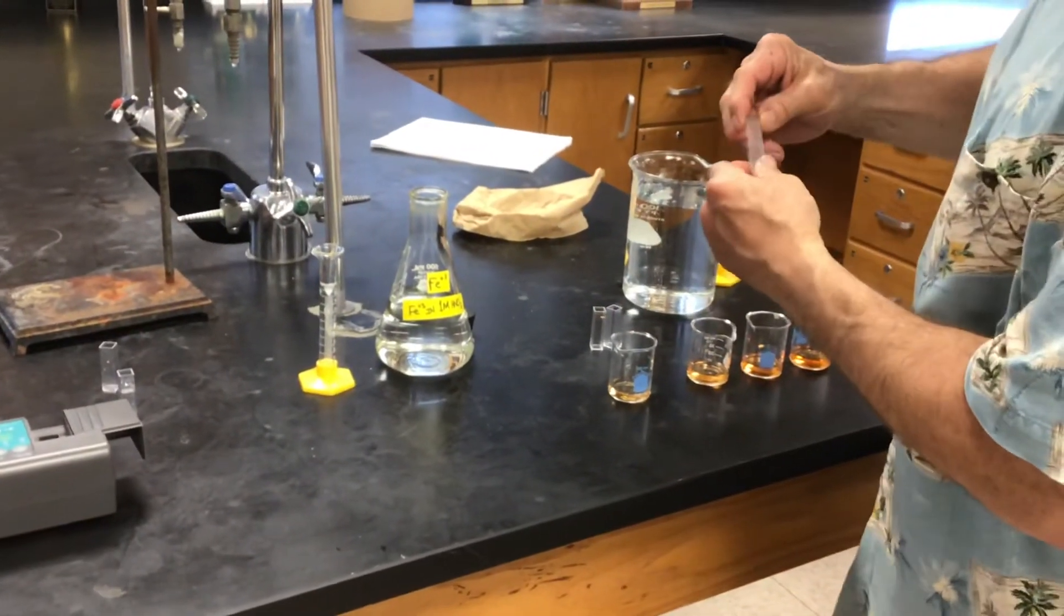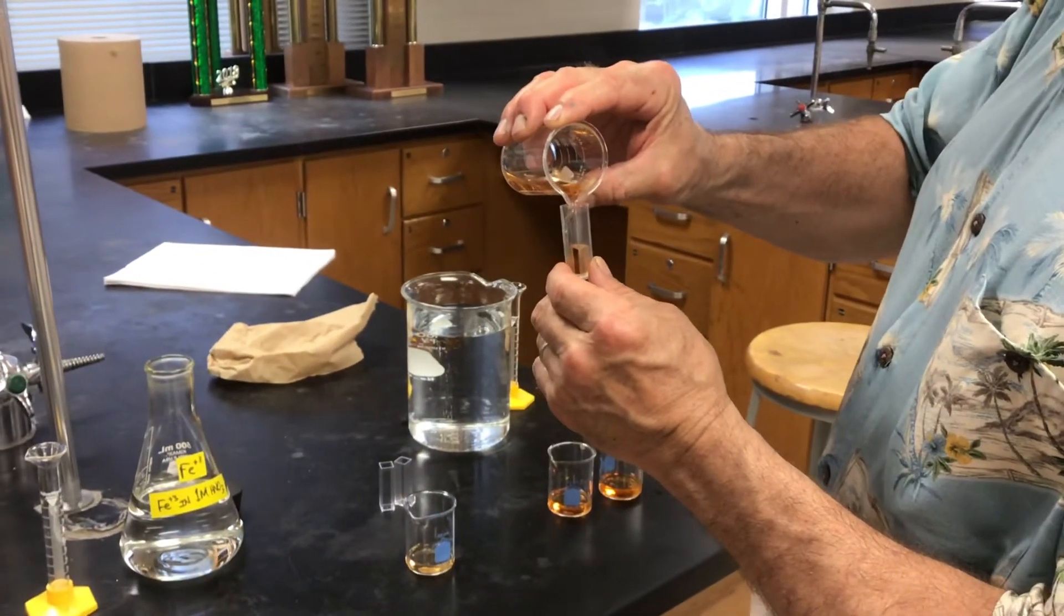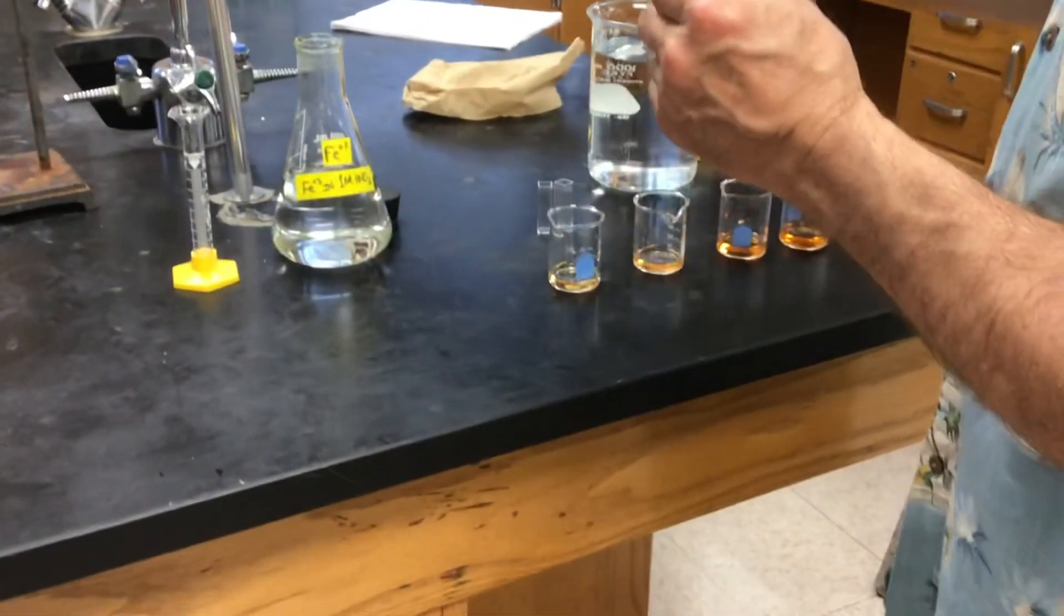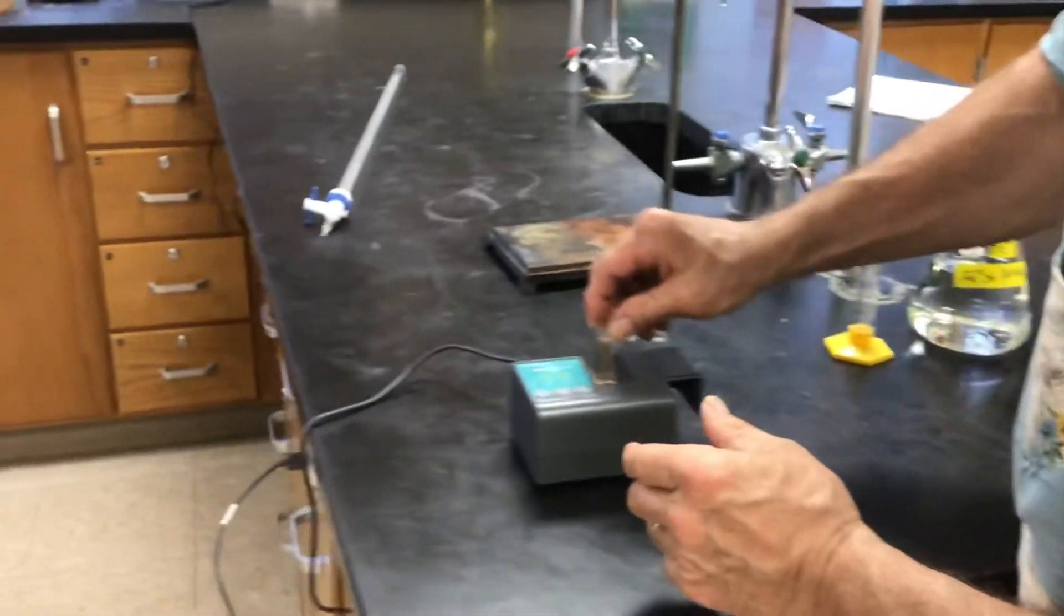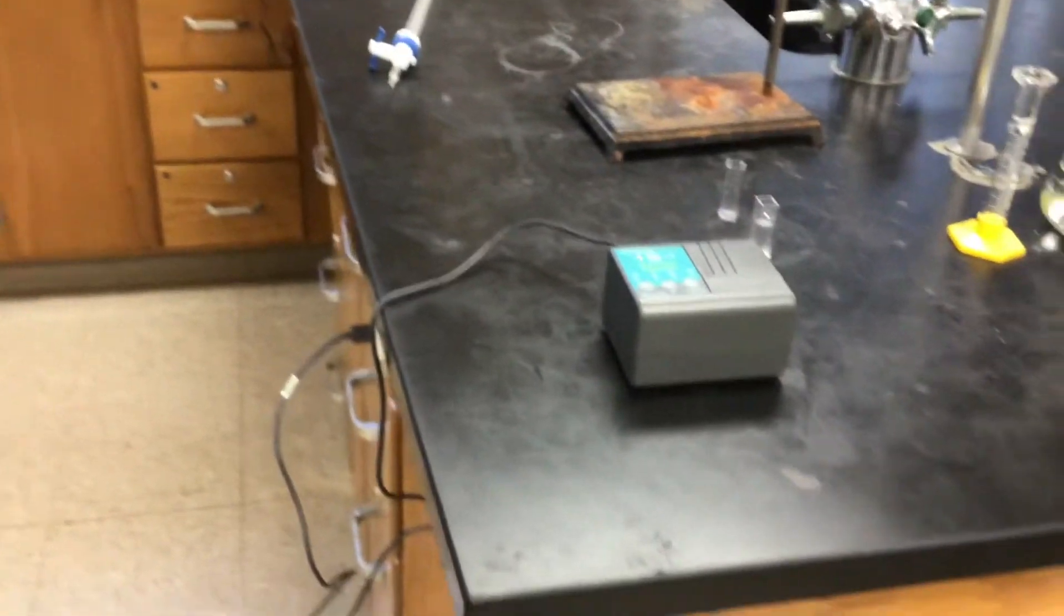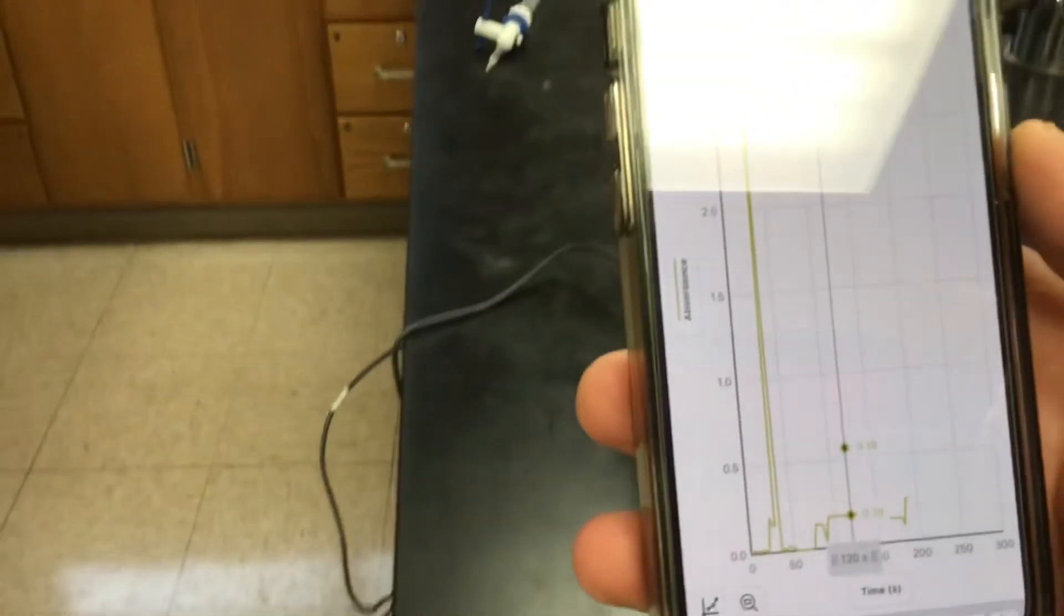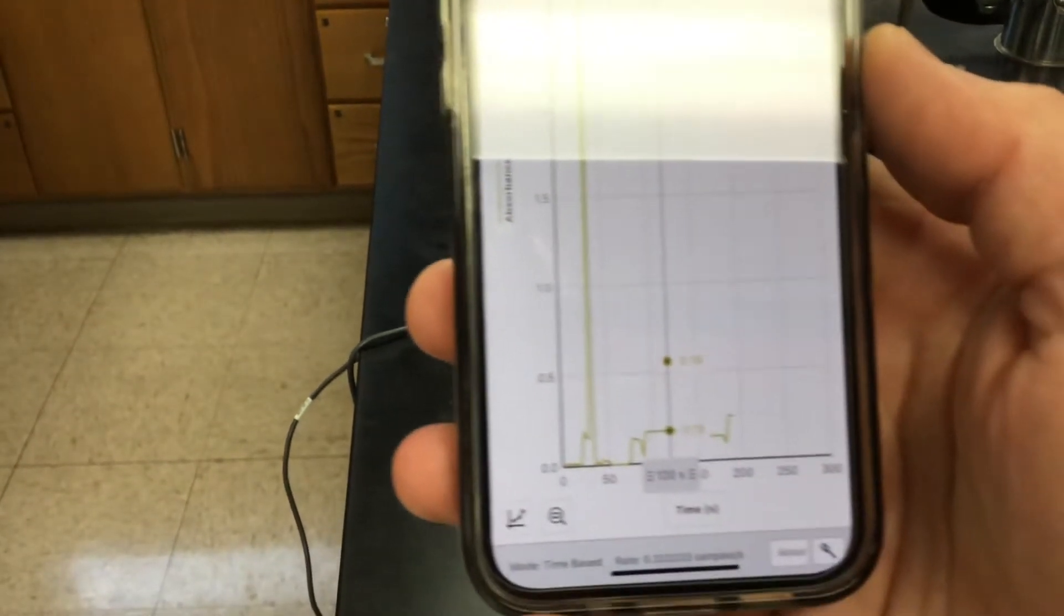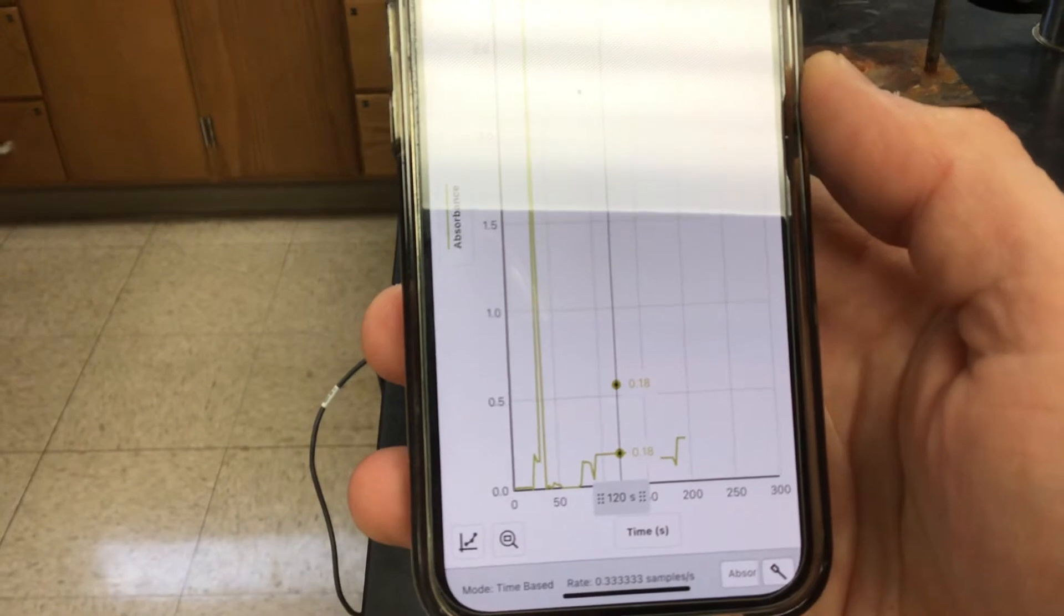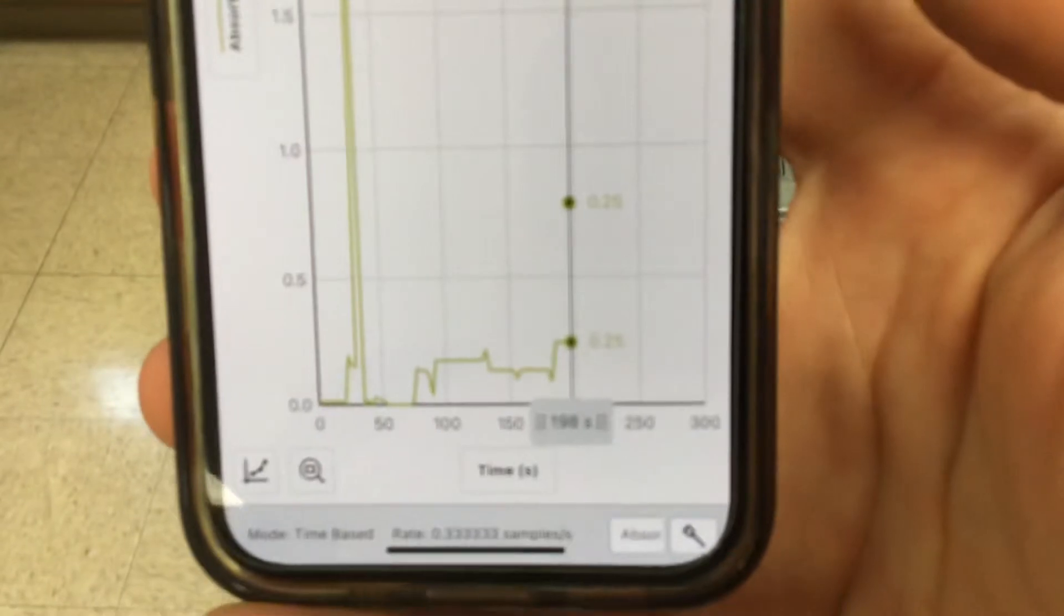Okay. Here comes trial two. You can tell from looking at the solutions get progressively darker. Maybe it's because the reactant solutions are more concentrated. So trial two goes in here and we're going to see the absorbance is higher and it looks like it's 0.25.